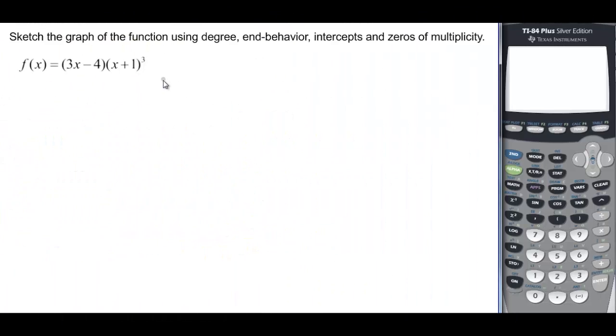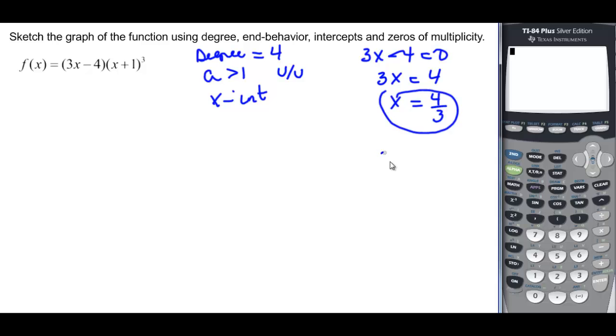Now let's go the other way. Knowing what we have here, let's sketch. So the degree here is 3 plus 1, so the degree is equal to 4. a is greater than 1, so that means that we're going to have end behaviors that are up in both directions. The x-intercepts are the zeros, so let's figure those out. If I have 3x minus 4 equals 0, x is going to be equal to 4 thirds. And if I have x plus 1 equals 0, then x is going to be equal to negative 1. That's my other zero, or x-intercept.